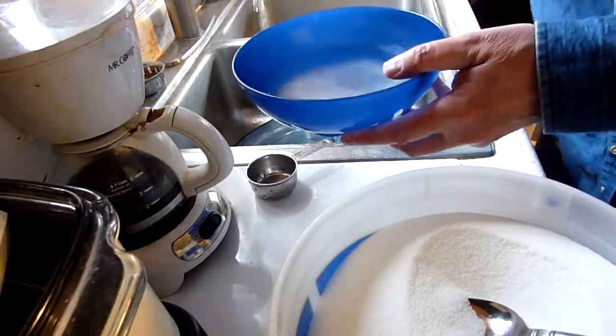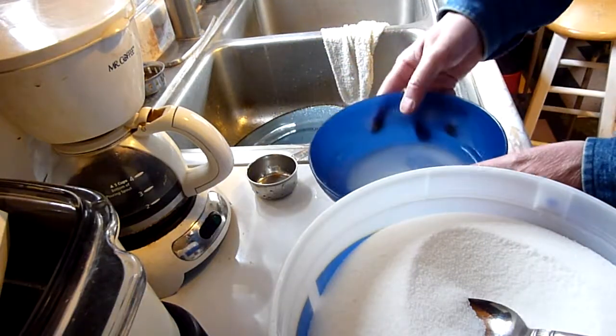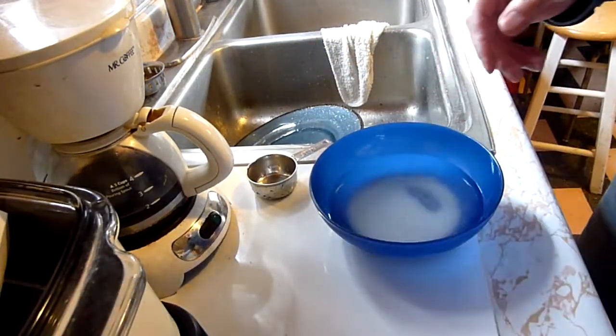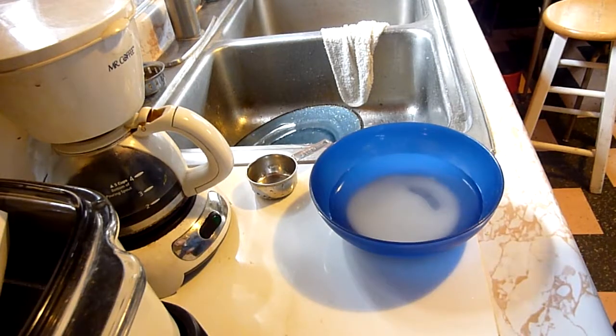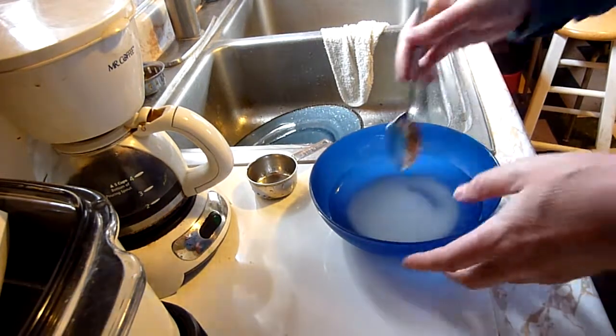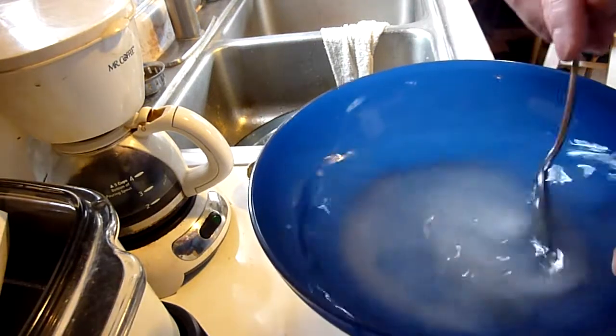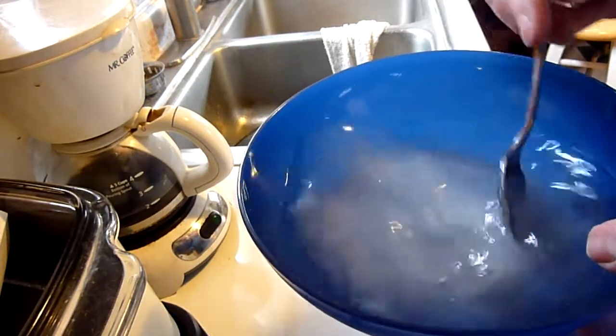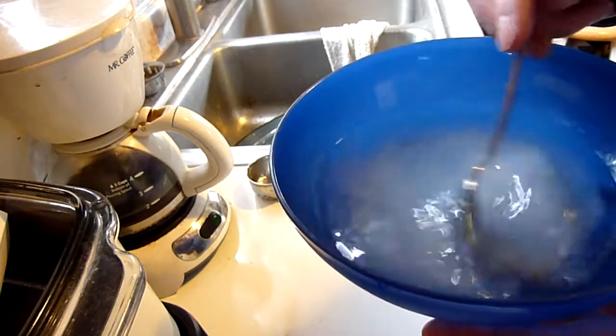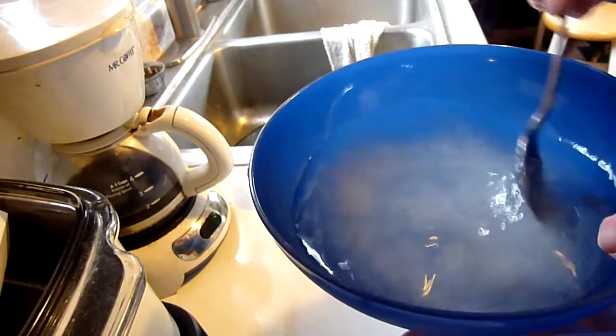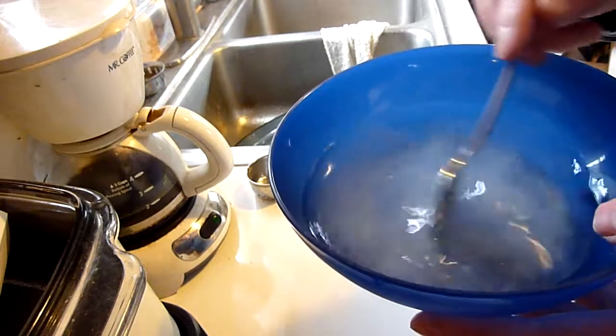I use C&H cane sugar and nothing else. C&H is real fine grained. Hummers don't like beet sugar and they prefer cane. And C&H is noticeably better sugar than the real cheap stuff you can buy in the store like Great Value or something. It dissolves a lot quicker.